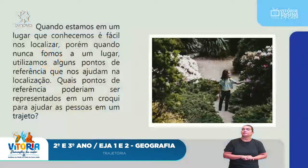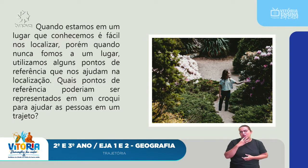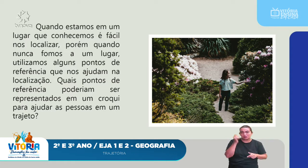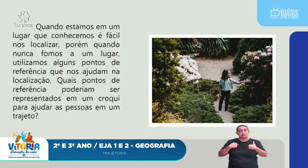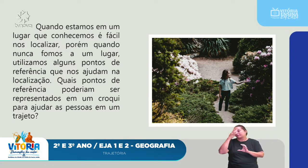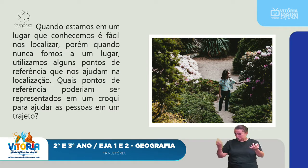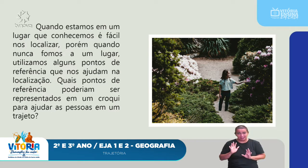When we are in a place we know, it is easy to locate ourselves. However, when we have never been to a place, we use reference points that help us find our location. Which reference points could be represented in a croqui to help people along a route? When you draw a croqui, nobody here is an expert in maps or routes — but we all know how to draw.